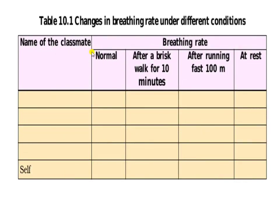Make a table with the name of a classmate or family member, and record the breathing rate at normal pace, after brisk walking for 10 minutes, after running, and at rest. Note the change in breathing rate under different conditions and determine in which activity the rate of breathing is slowest and in which it is fastest.